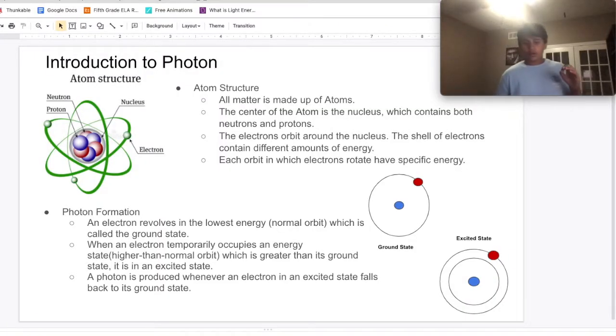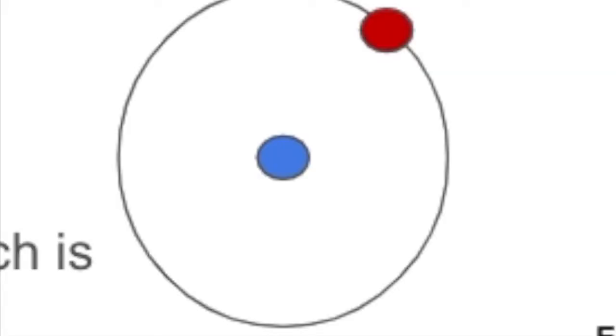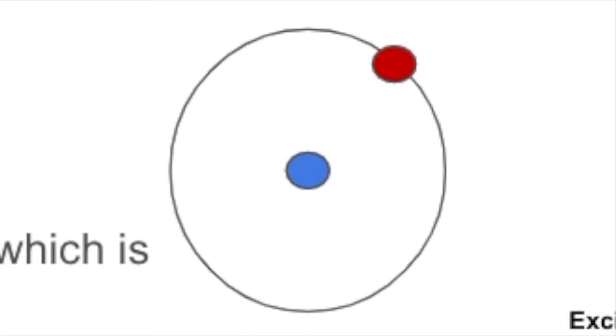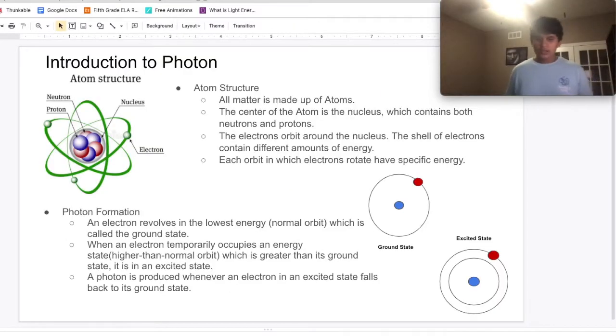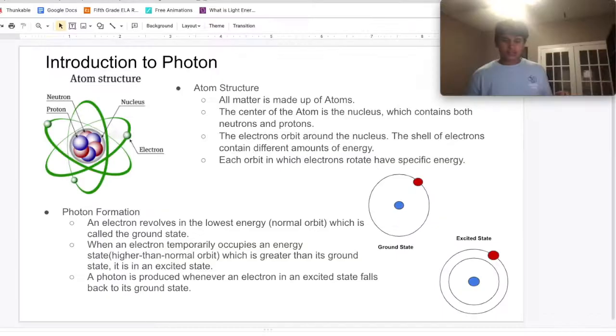The orbit in which electrons rotate around the nucleus have a specific amount of energy. So let us see how electrons emit electromagnetic energy in the form of photons. The ground state is the lowest energy orbit for electrons. When electrons absorb energy, they temporarily move to a higher orbit, which is called the excited state.